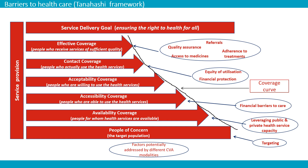Availability is the first question that health actors ask: Are there any hospitals? Are they well equipped? Are there any health workers? Are medical supplies available and are they of good quality? The second is accessibility coverage. Do people have access to these health services? How far away are they? And this is where a key financial barrier may be found.